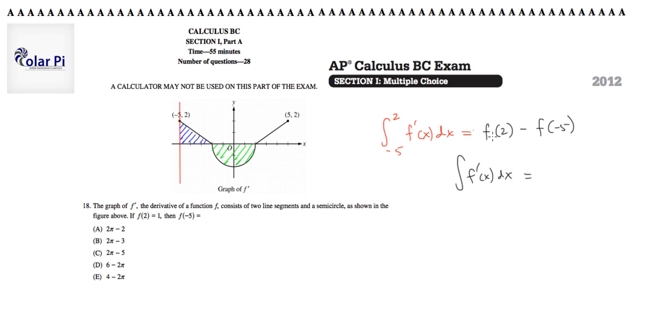So the left side in red is representative of the two areas together, so it must mean that f of 2 minus f of negative 5 is equal to the value of this area plus that area.